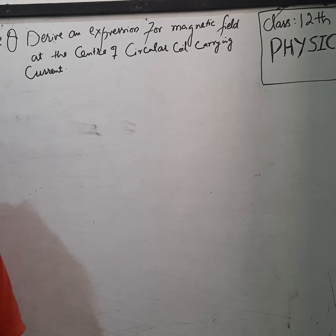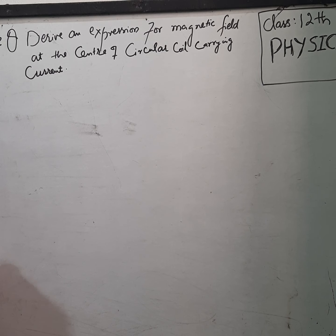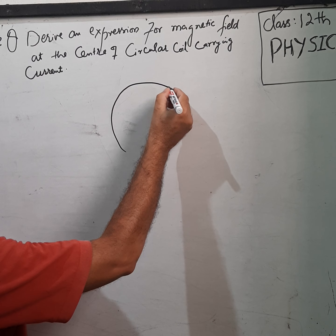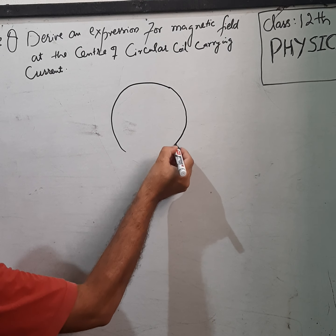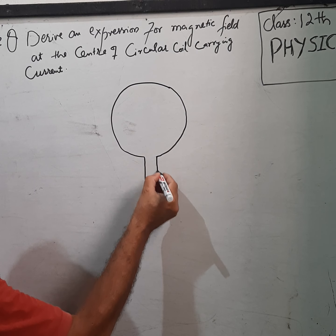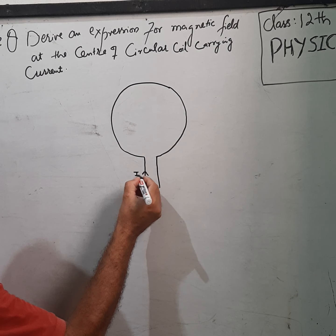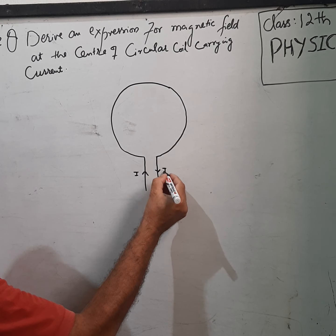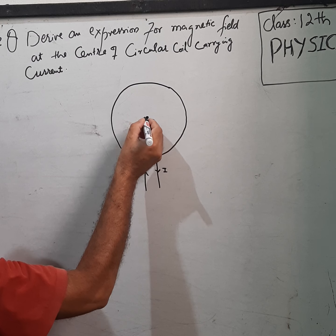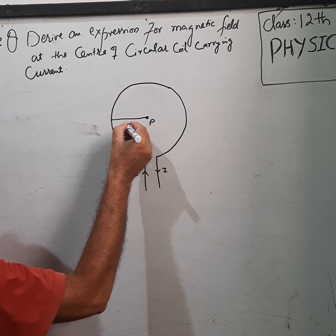We use Biot-Savart Law to find the magnetic field at the center of a circular coil. This circular coil carries current I throughout, and its center is point P with radius R.